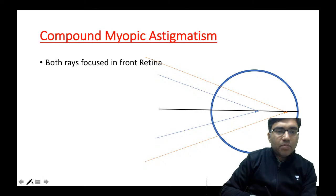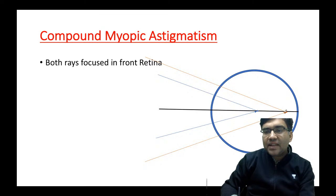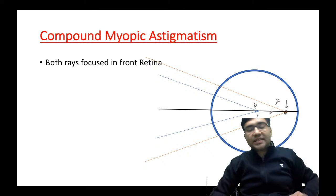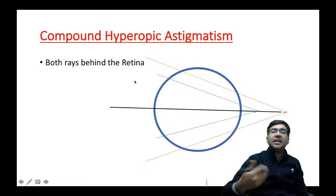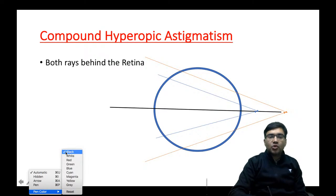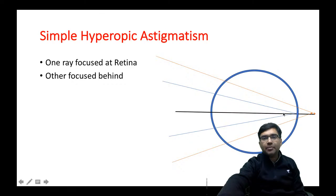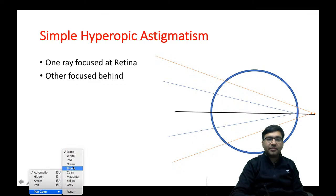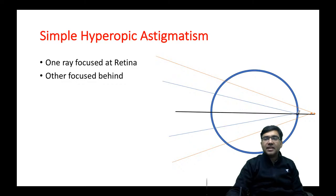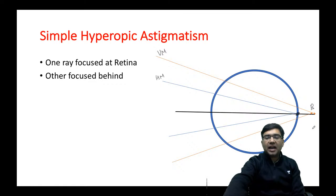In compound myopic astigmatism, both rays — F1 and F2 — are focusing in front of the retina. In simple hyperopic astigmatism, one ray focuses on the retina and the other — say the vertical meridian — focuses behind the retina.